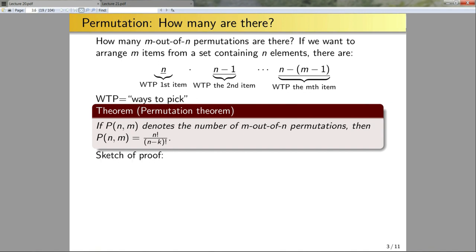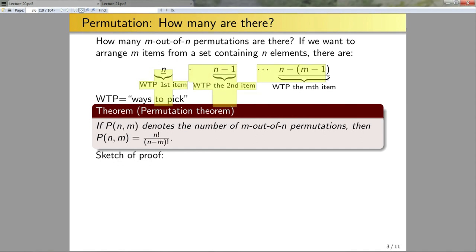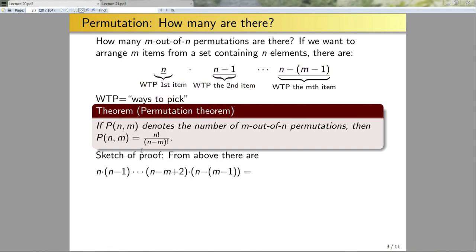Why would this theorem be true? Let's give a sketch of a proof. From the combinatorics argument above, I know how many m-out-of-n permutations there are. I'm going to recreate that argument and show that the product can be written in this form.